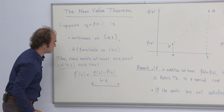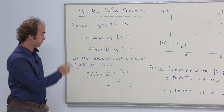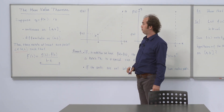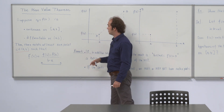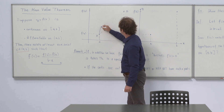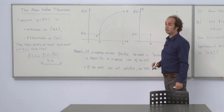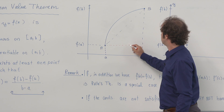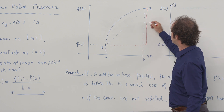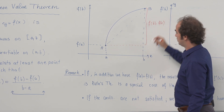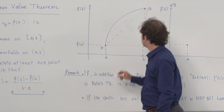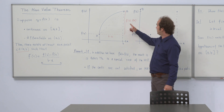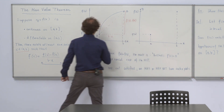Let us try to understand what the right hand side is calculating. Passing to the graph, from point a to b I'm going to draw a curve satisfying the two conditions — it's continuous and differentiable. The quantity on the right hand side has numerator f(b) minus f(a) and denominator b minus a. This quantity, f(b) minus f(a) divided by b minus a, is the slope of the secant line.